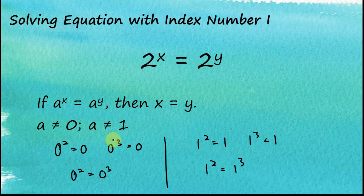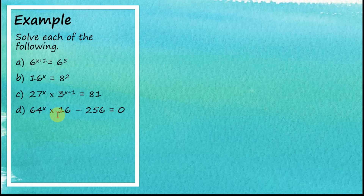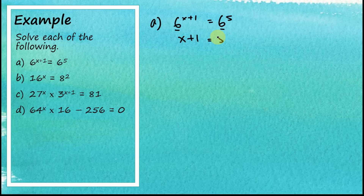Let's solve the following examples. For part a: six to the power of x plus one equals six to the power of five. Since the bases are the same, the indices must also be the same, so x plus one equals five, and therefore x equals four.